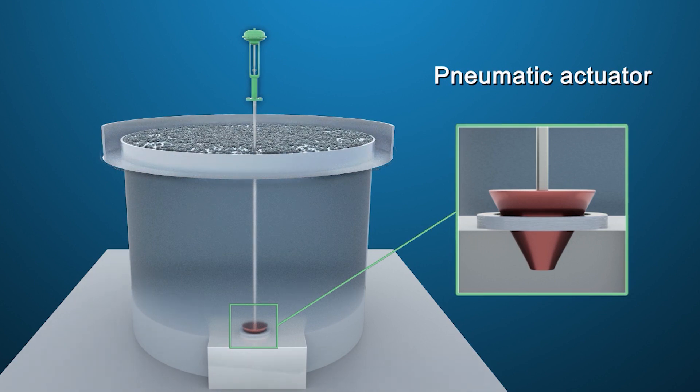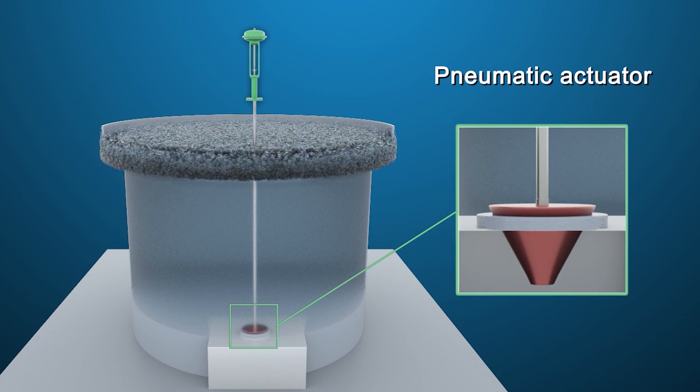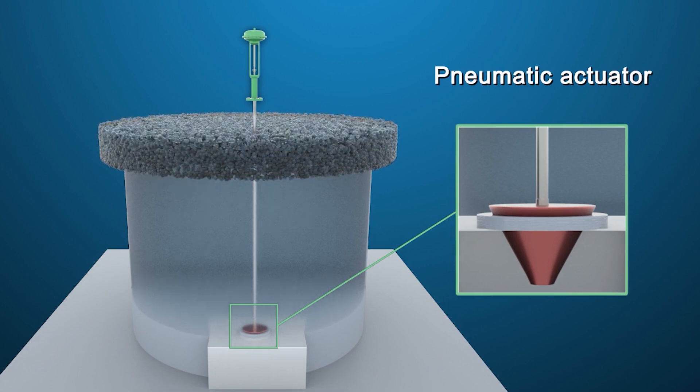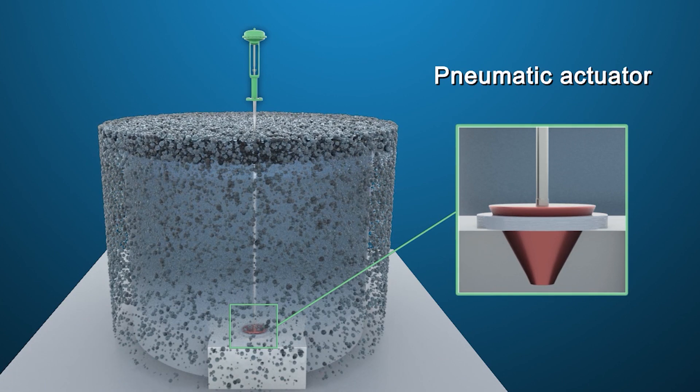If the valve stalls in a closed position with a pneumatic actuator and does not open when commanded by the control signal, the froth and pulp will overflow and spill to the ground, resulting in expensive cleanup and reprocessing.